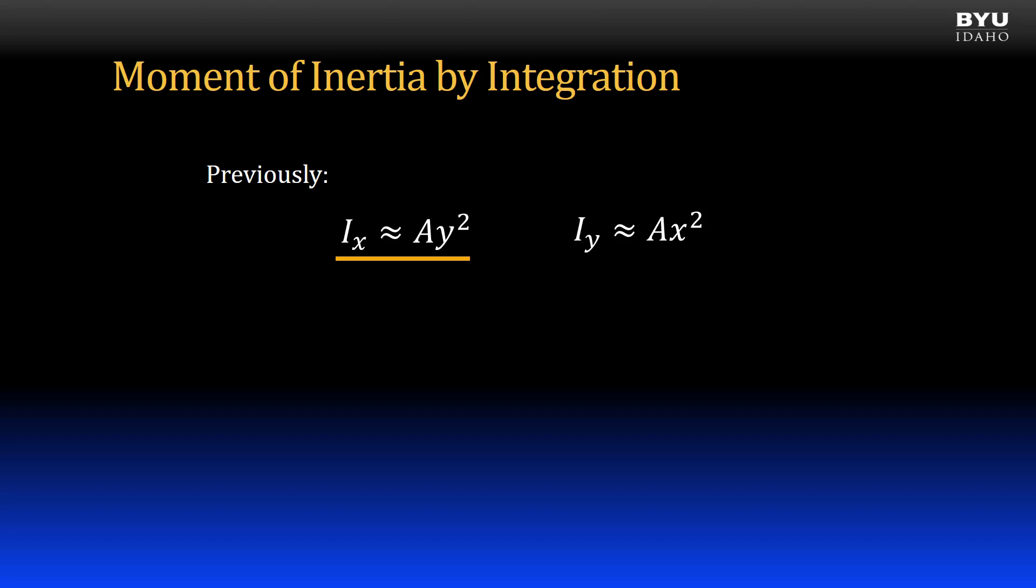As previously mentioned, the moment of inertia about an x-direction axis, denoted with an uppercase I sub x, is approximately equal to its area times a y-direction dimension squared. Likewise, the moment of inertia about a y-direction axis is approximately equal to its area times an x-direction dimension squared.